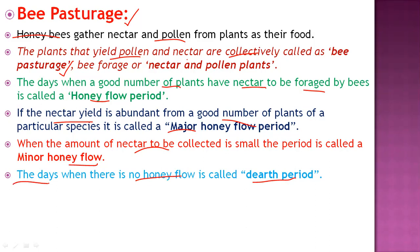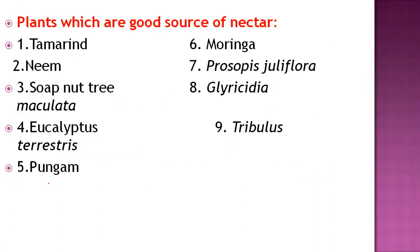Now let's see which plants are good sources of nectar. Number one is tamarind, which provides very good nectar. Other nectar source plants include neem, soft nut tree, eucalyptus, pungam, moringa, Prosopis juliflora, Gliricidia, and Tribulus. Remember at least five of these plants which are rich sources of nectar for honeybees.